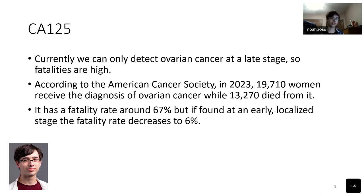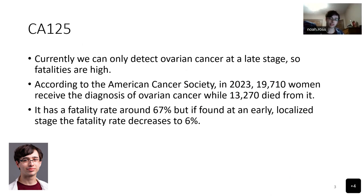Currently, we can only detect ovarian cancer at a late stage, so its fatalities are high. According to the American Cancer Society, in 2023, 19,710 women received the diagnosis, while 13,270 died from it. It has a fatality rate of around 67%, but if found early at a localized stage, the fatality rate decreases to 6%.